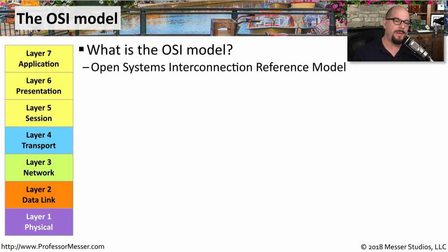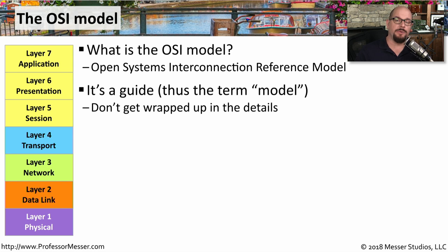The OSI model is the Open Systems Interconnection Reference Model, but we often simply refer to it as the OSI model. The OSI model is a guide we use to help understand the flow of data as it goes across the network. This model is not intended as a strict representation, but instead is an overall guide to understand exactly how the data is flowing. It might overlap just a bit between layers. Don't get too wrapped up in the details — you should instead be looking at a very broad view of the data as it's flowing from an application onto the network and back again.